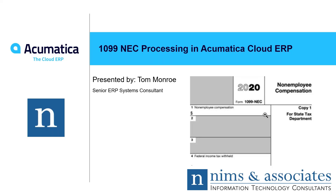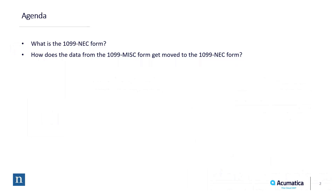Thank you very much for joining us today. Today we're going to talk about the new 1099 NEC form and how to use that form in Acumatica Cloud ERP. Let's take a look at our agenda — we're going to talk about what the 1099 NEC form is and how the data from the 1099 MISC or miscellaneous form gets moved to the 1099 NEC form.